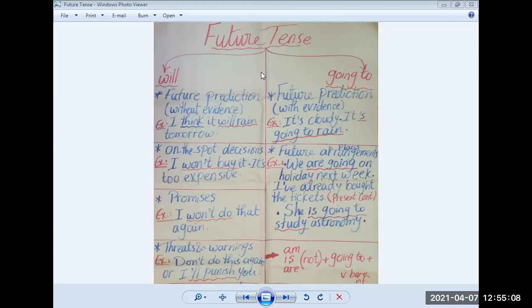So let's start first comparing will and going to. If you notice here, both are used for future predictions, future prediction and future prediction. However, will is used for future prediction without evidence. You have no clue or no proof that the action will happen. So I can say, I think it will rain tomorrow. Do you have evidence here? No.